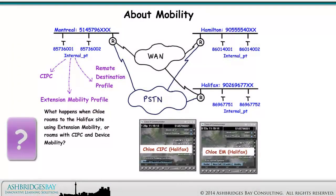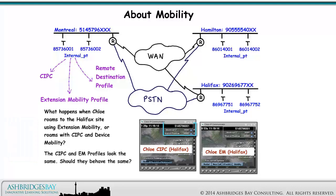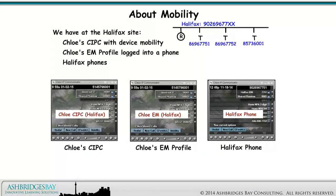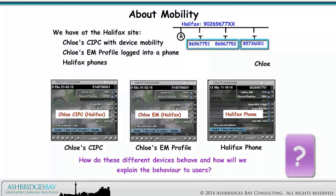What happens when Chloe roams to the Halifax site using extension mobility, or roams with CIPC and device mobility? The CIPC and EM profiles look the same — should they behave the same? At the Halifax site we have Chloe's CIPC with device mobility, Chloe's EM profile logged into a phone, and Halifax phones. How do these different devices behave, and how will we explain the behavior to our users?